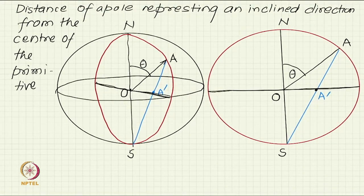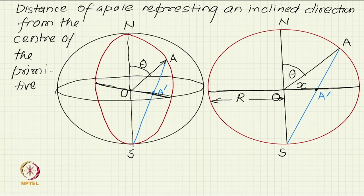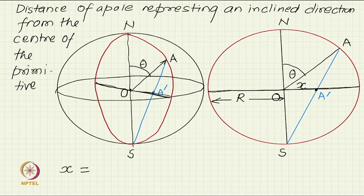The geometry is right in front of you. We want to find what this distance x is in terms of the radius R and the angle theta, because as you vary theta, x will vary — theta is a function of x. Please take some time to solve this geometry and find x as a function of R and theta.